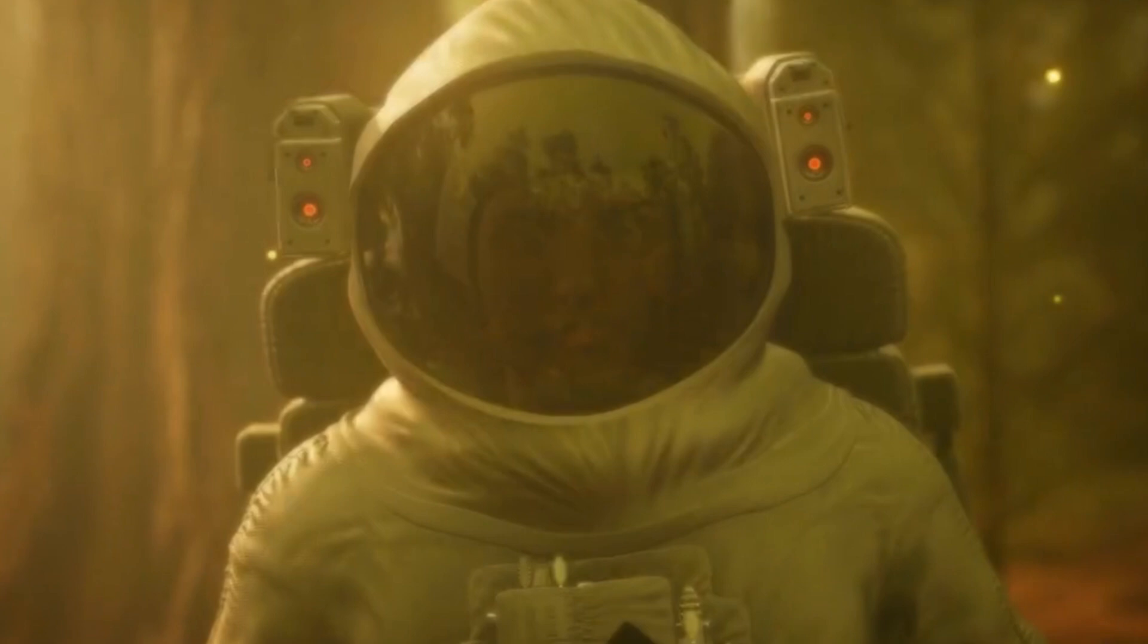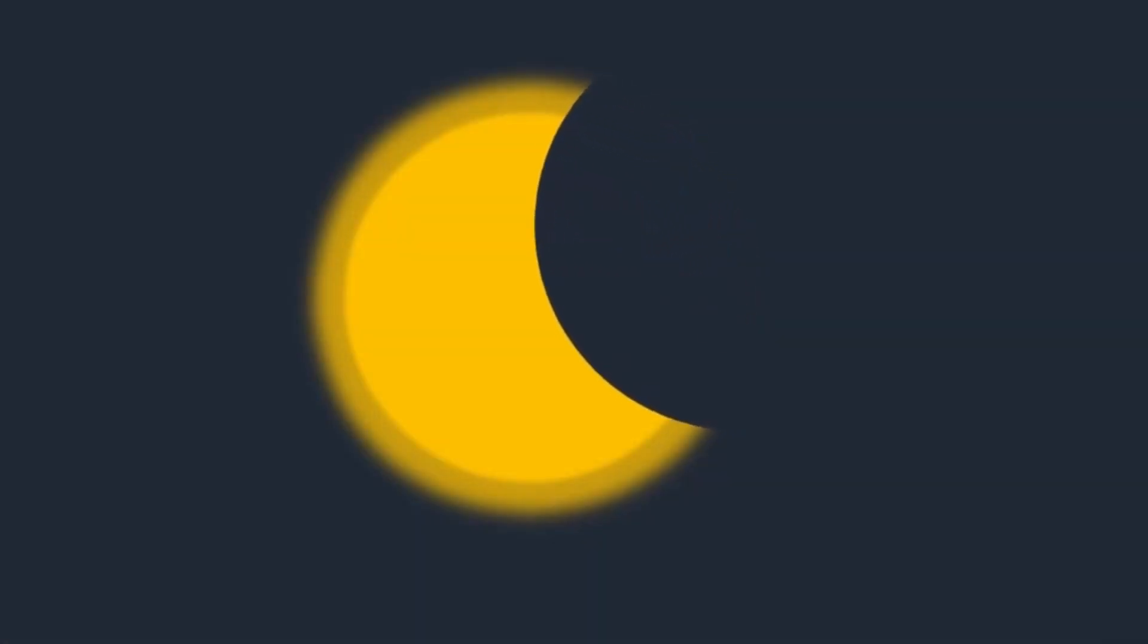A solar eclipse occurs when the moon passes directly between the earth and the sun, casting its shadow on our planet. This alignment perfectly blocks the sun's rays from reaching certain areas, creating a temporary shadow on earth's surface.